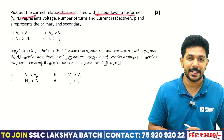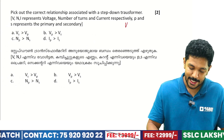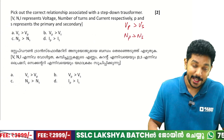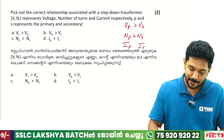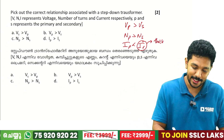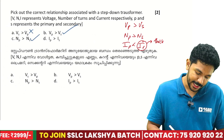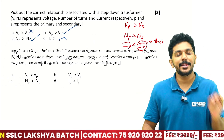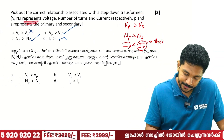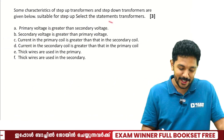Pick out the current relationship associated with a step-down transformer. In a step-down transformer, the primary voltage Vp is greater than secondary voltage Vs. The turns ratio: Np is greater than Ns. For current, since power is conserved, the secondary current Is is greater than primary current Ip. Some characteristics of a step-up transformer will also be in the exam.